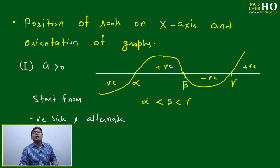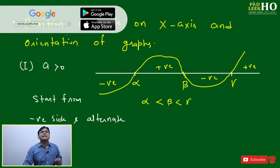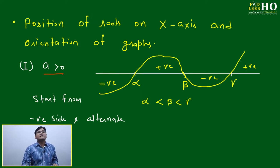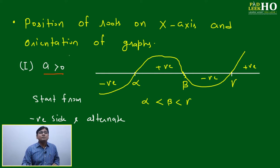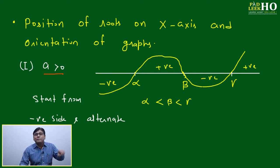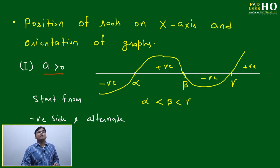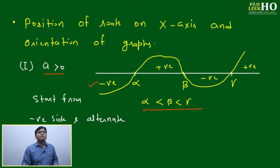The main thing is to understand how the curve changes — from negative to positive or positive to negative. Two things help us analyze this: the position of roots on the x-axis and the orientation of the graph. If a is greater than zero (the coefficient of the highest power of x), then just as in quadratic equations, the nature of the curve changes. If a > 0, and roots alpha, beta, gamma are in increasing order on the number line, we start from the negative side and alternate: negative, positive, negative, positive.